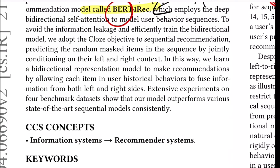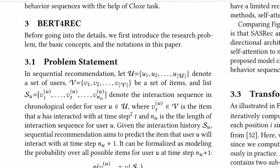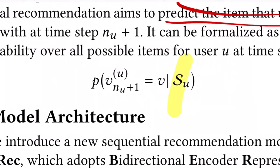After outperforming existing state-of-the-art methods on benchmark datasets, let's look at the formal problem. Let U be the set of all users, V the list of all items. The interaction sequence S for user u is the sequence of items interacted with over time steps 1 to n_u. Given this history, sequential recommendation aims to predict the next item the user is likely to interact with.